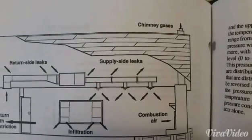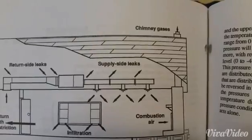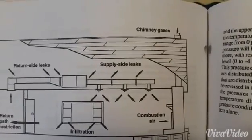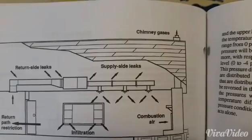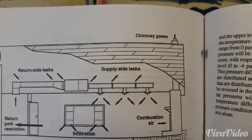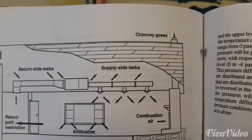If you have supply side leaks, what's going to happen is air that was meant for conditioning will now be in the attic space, crawl space, or whatever area the ductwork is running. And you'll have a negative pressure in the home.